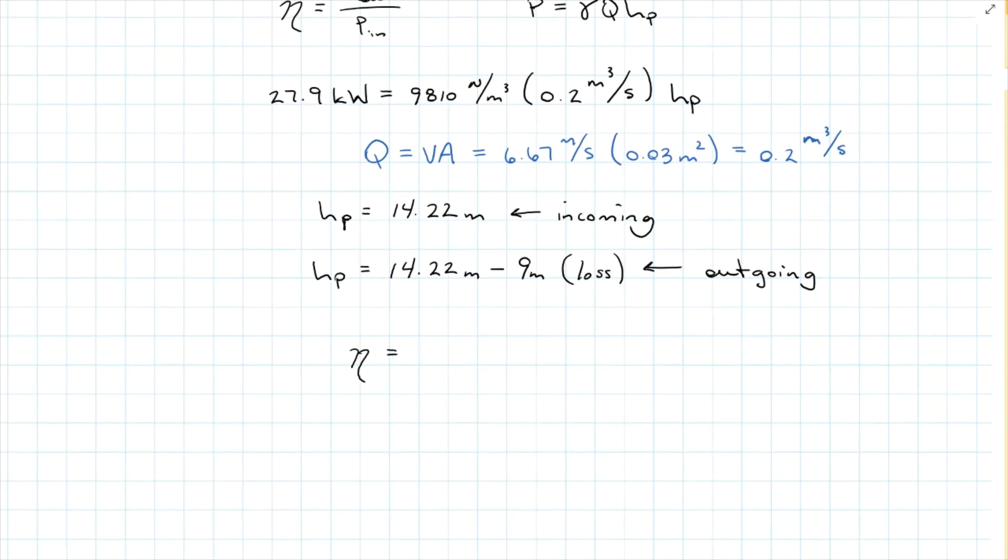For efficiency, outgoing divided by incoming, we have 5.22 meters divided by 14.22 meters, which is equal to 0.367. So our pump is 36.7 percent efficient.